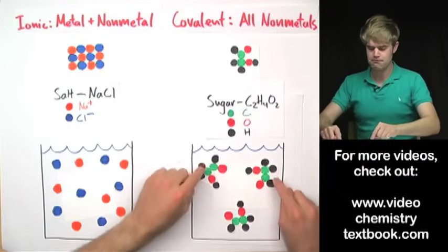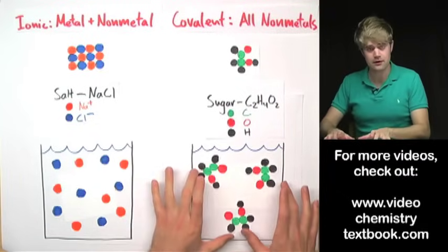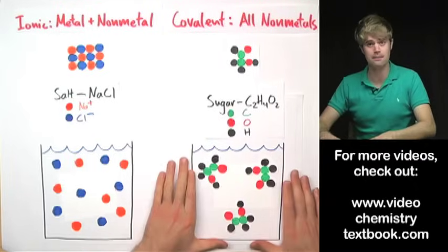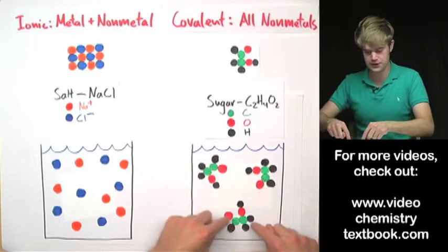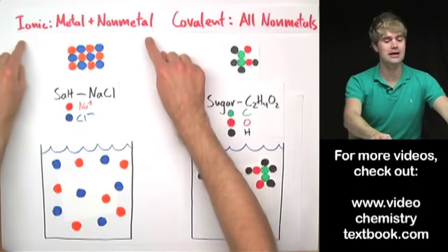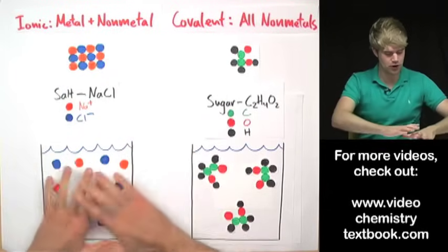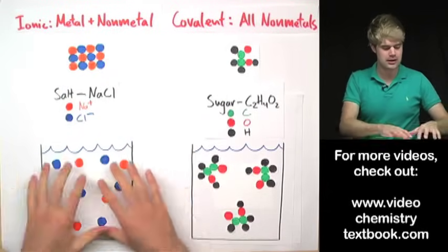Instead, the molecules stay together. The atoms in the molecules stay together. So this is a big difference between how covalent compounds dissolve, where the molecules stay molecules, and how ionic compounds dissolve, where the grains of these things like salt actually break apart into the individual atoms.